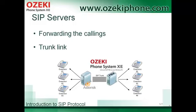For example, extension 1 and extension 4 are in different domains, and if the first phone tries to call the fourth phone, the Asterisk server has to know that the fourth phone belongs to the Ozeki Phone System XE, so Asterisk has to forward the request to Ozeki Phone System XE which then forwards it to the fourth phone.